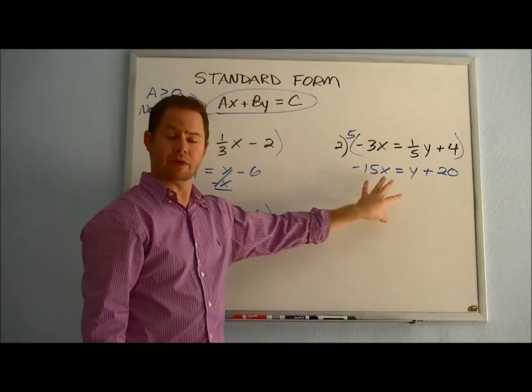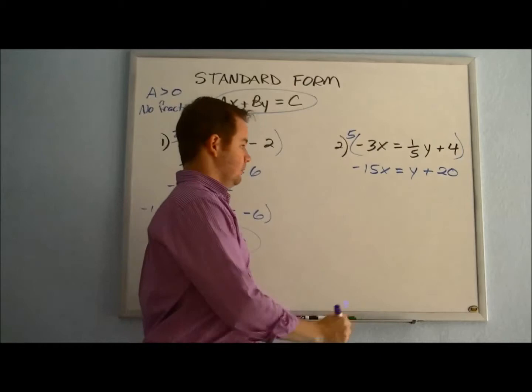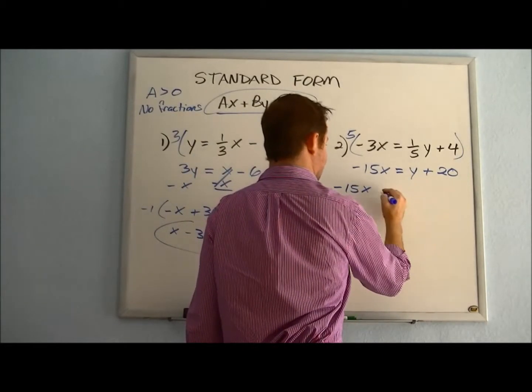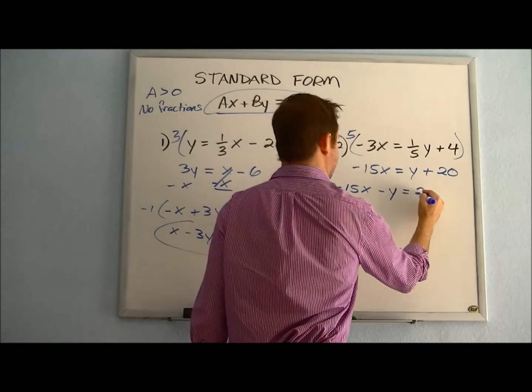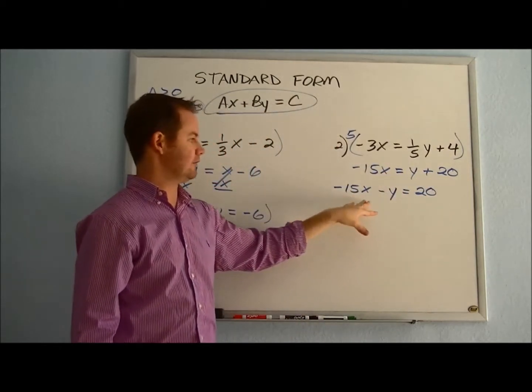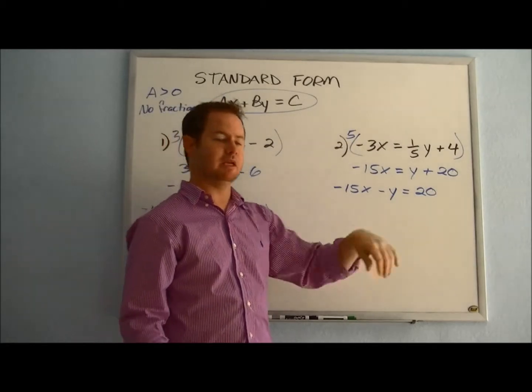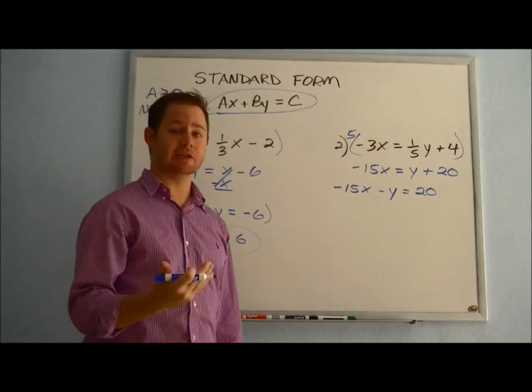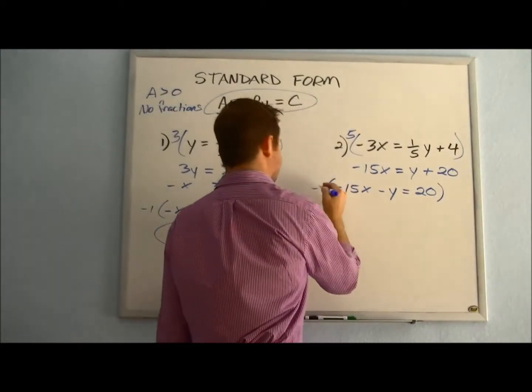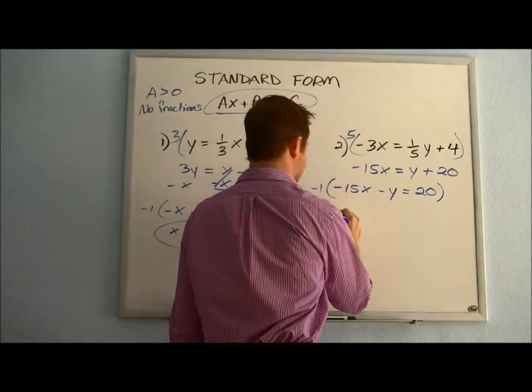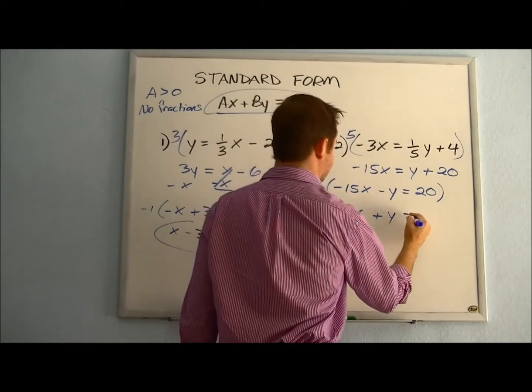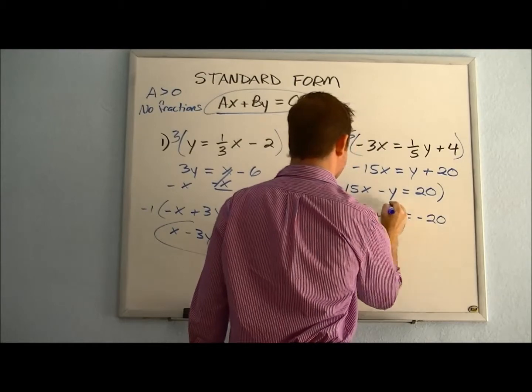Next up, we want to bring our x and y over to the same side. We already have the x over here. We're going to go ahead and bring over the y by subtracting it. We subtract y from this side. We get -15x - y = 20. And then we notice that we have a negative coefficient on x, which we want to get rid of. So we're going to multiply the whole thing by -1 to change the sign and give us a positive 15x + y = -20. And that would be standard form of that equation once we rearrange it.